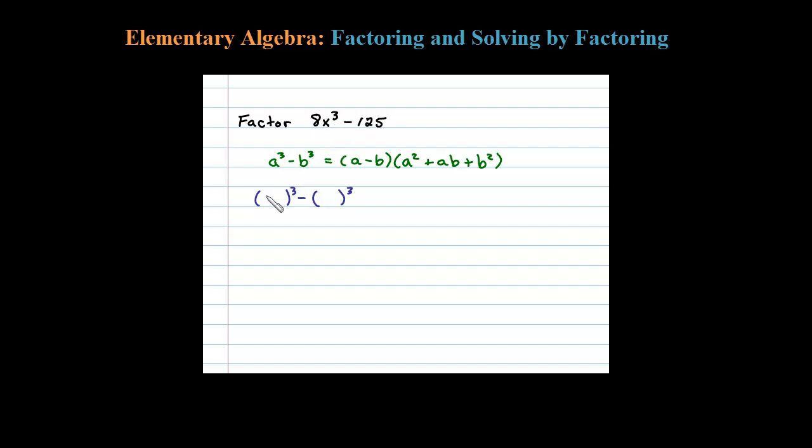After a little bit of thought, hopefully you can see that is 2x. 2x cubed is 8x³. 125 is a perfect cube and that is 5³. 5 to the third power is 125.